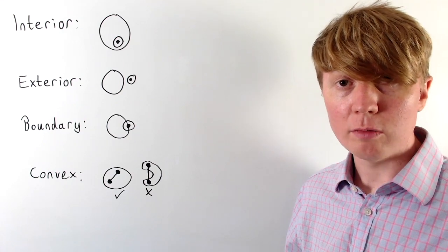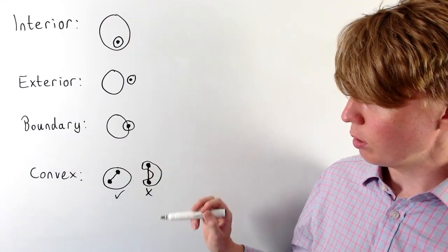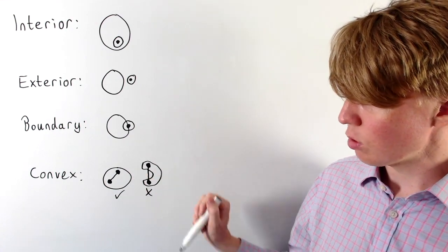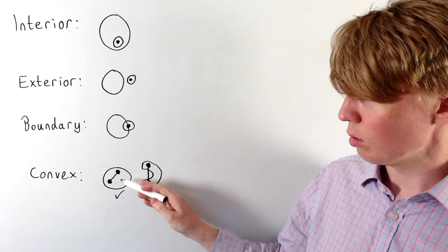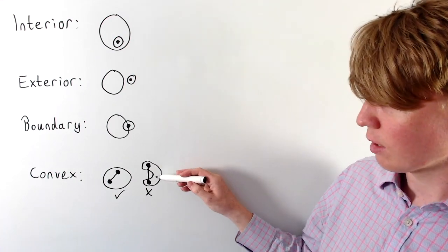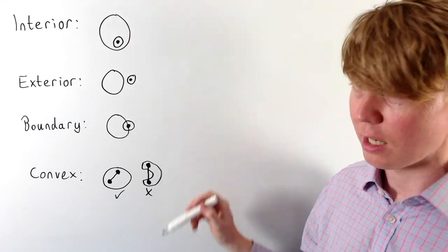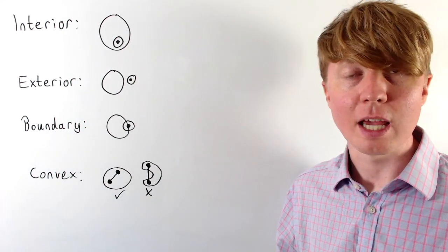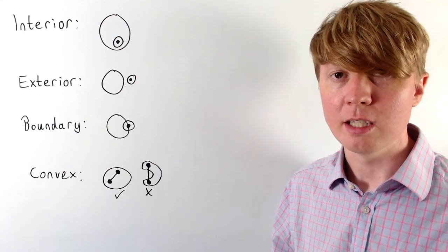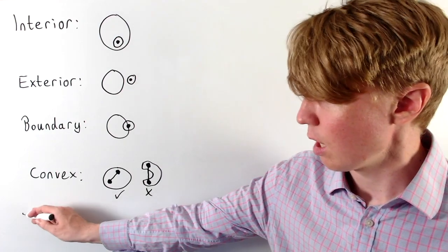The definition of a convex set is that for every two points that belong to your set, the line segment joining those two points is always contained within your set. Here we've got a non-example where the line segment joining two points isn't entirely contained within the set, so this set isn't convex. This captures the idea of having an indent or a hole in your set.